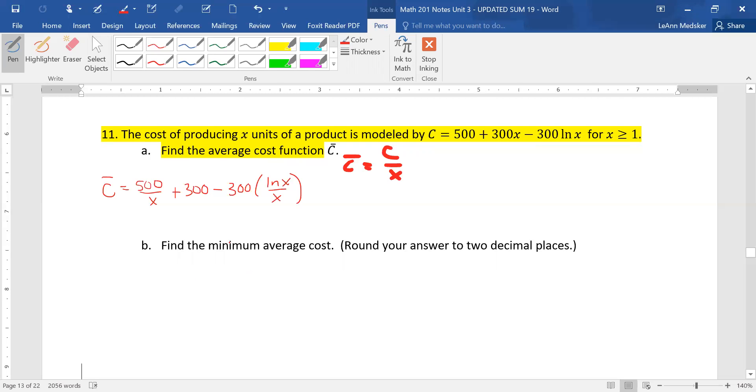The next part asks us to find the minimum average cost. That means we're going to be doing a derivative, so when we take the first derivative of C bar, we would have that this number is 500X to the negative 1, so we would get that this is negative 500 over X squared in the denominator. 300 would be a derivative of nothing.